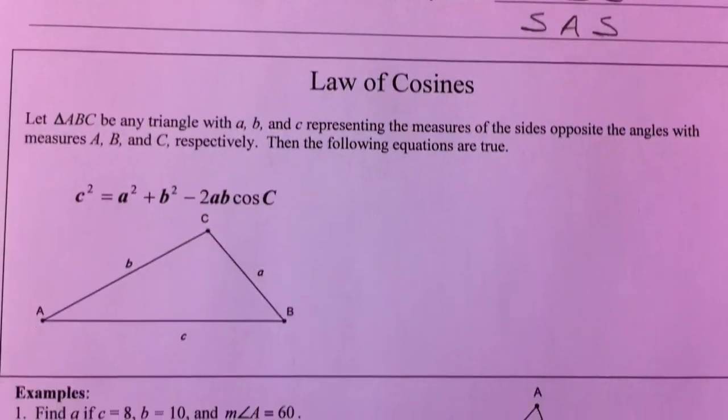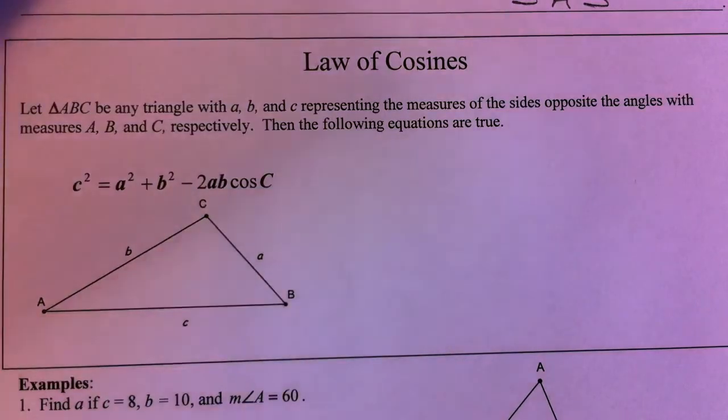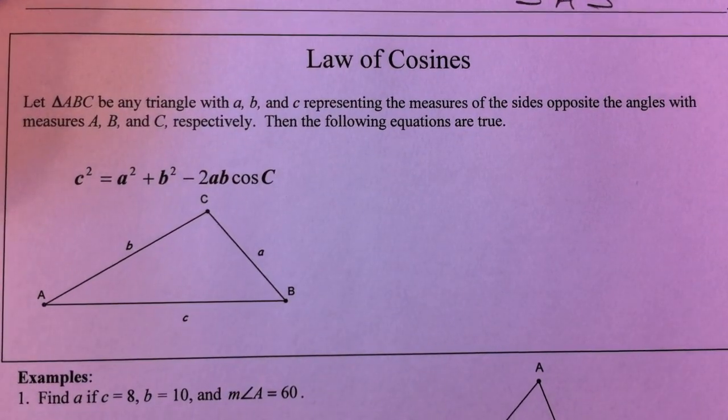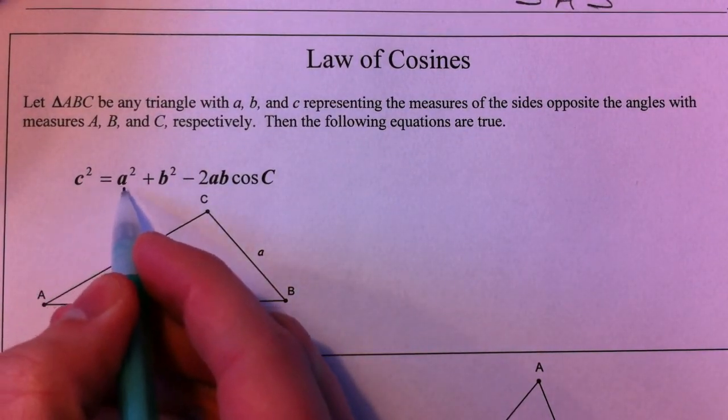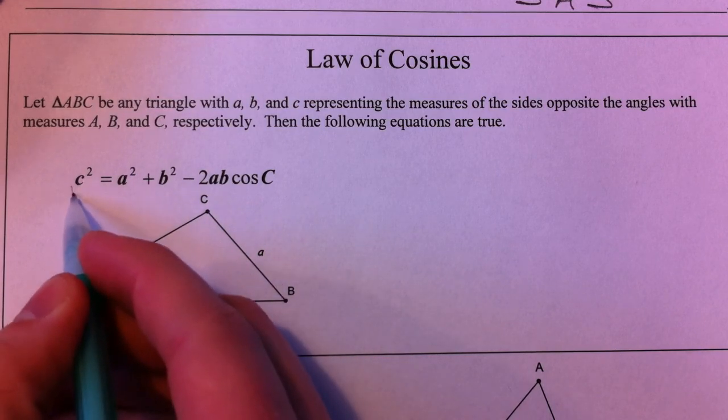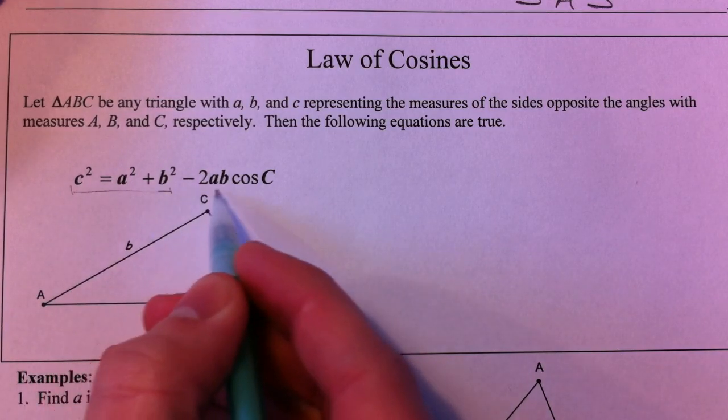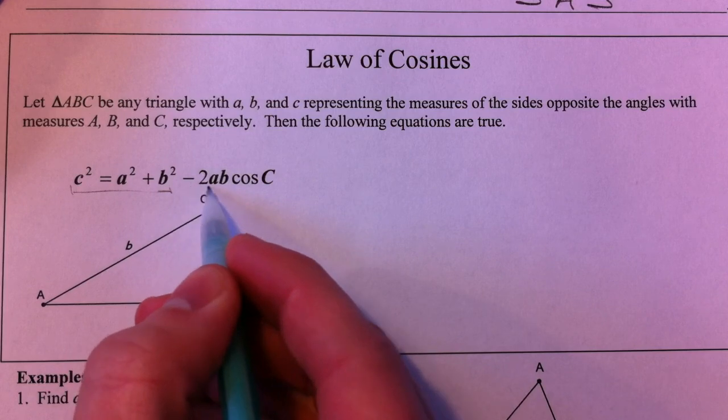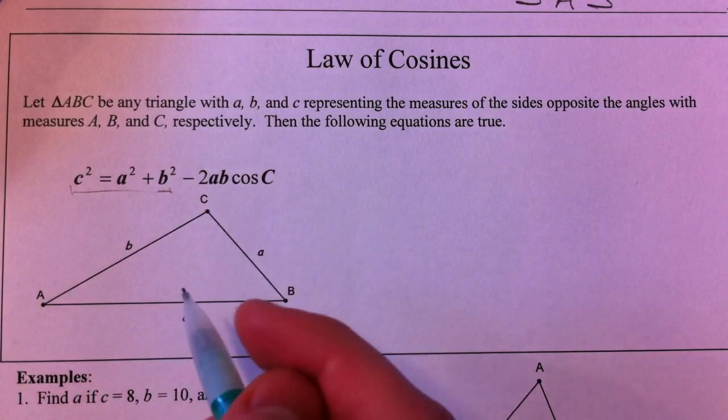Law of cosines. I'm going on the assumption that most of you have seen this, but I'll kind of teach it as if you haven't. c² equals a² plus b². That's your regular Pythagorean theorem. But then if it's not a right triangle, you add this minus 2ab cosine of C.